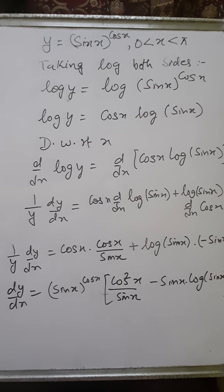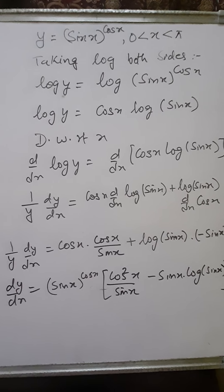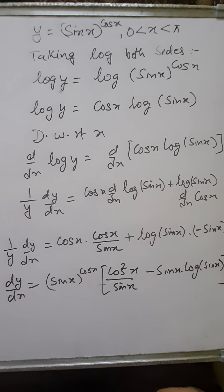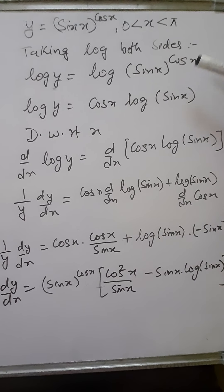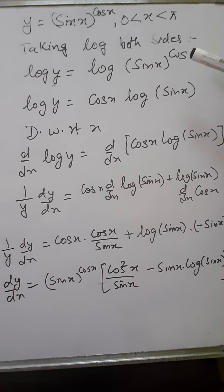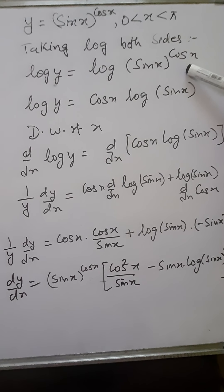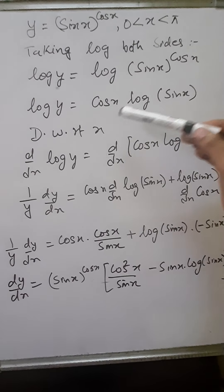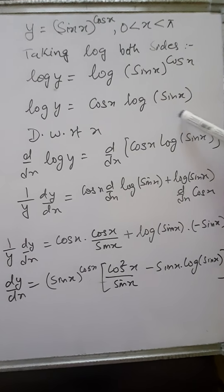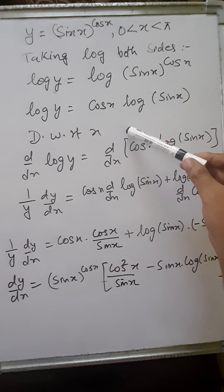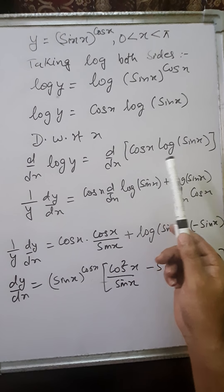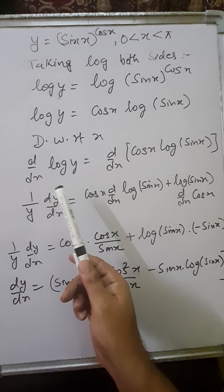Let's see another sum. Here we have to calculate the derivative of the function y equals sin(x) to the power cos(x). Again, variable to the power variable — function to the power function — is given. So we'll take log both sides. It will become log y equals log sin(x) to the power cos(x). Applying the property log m^n = n log m, the cos(x) comes in front: log y equals cos(x) log sin(x). This function has been simplified and now we can differentiate it.